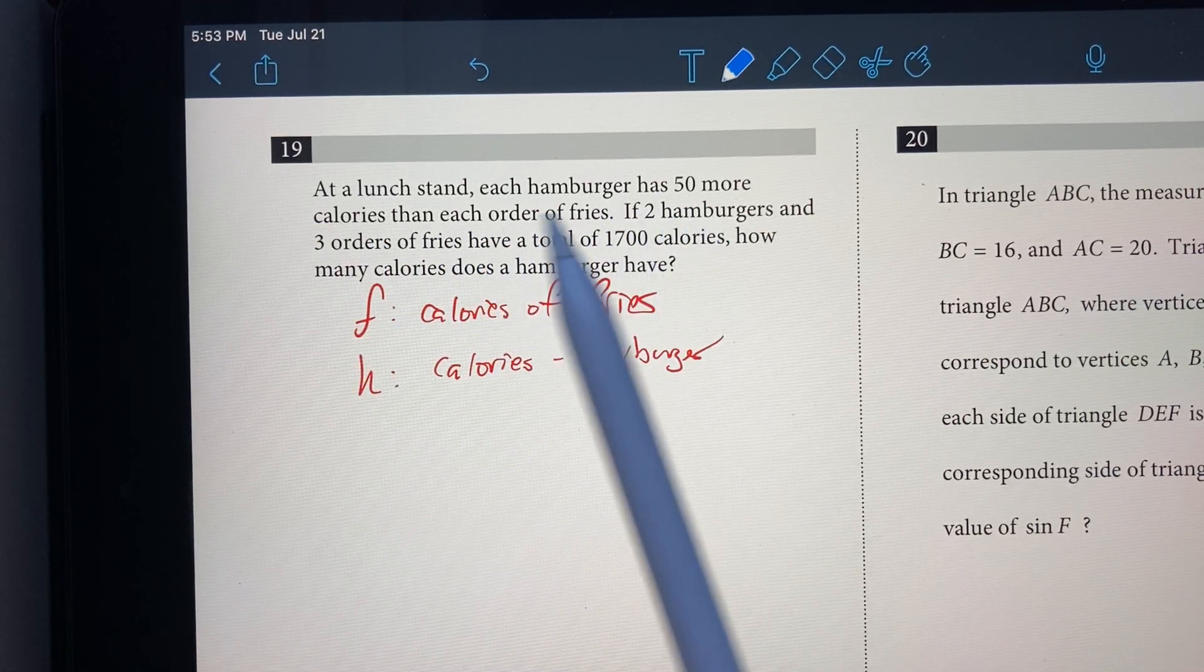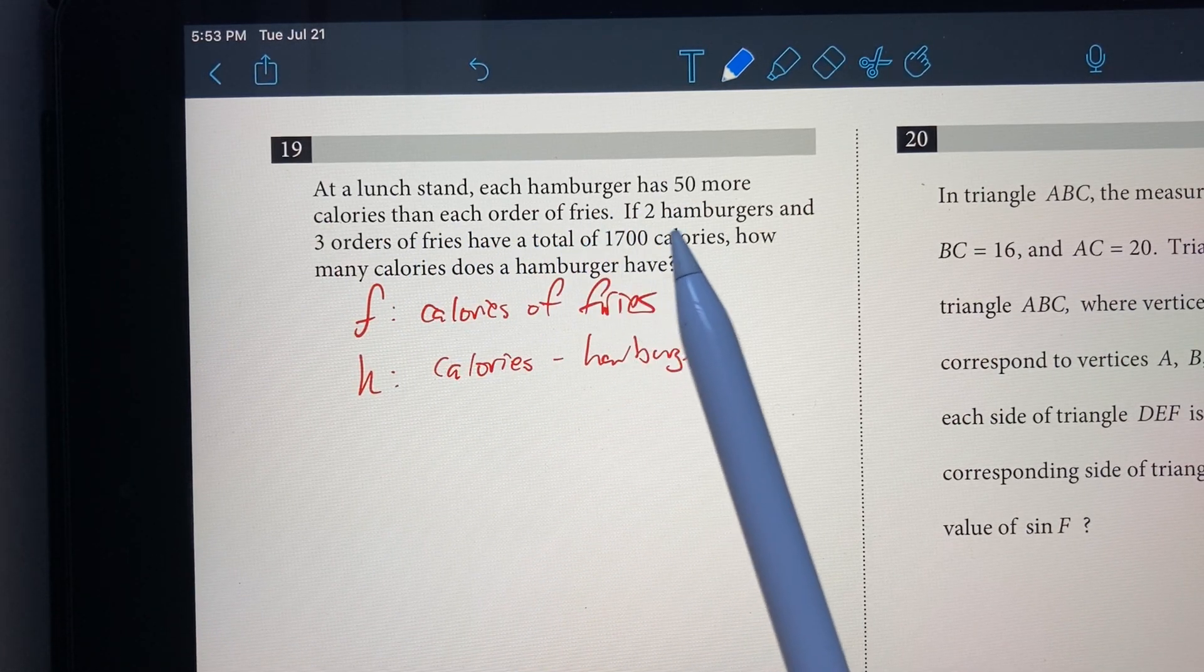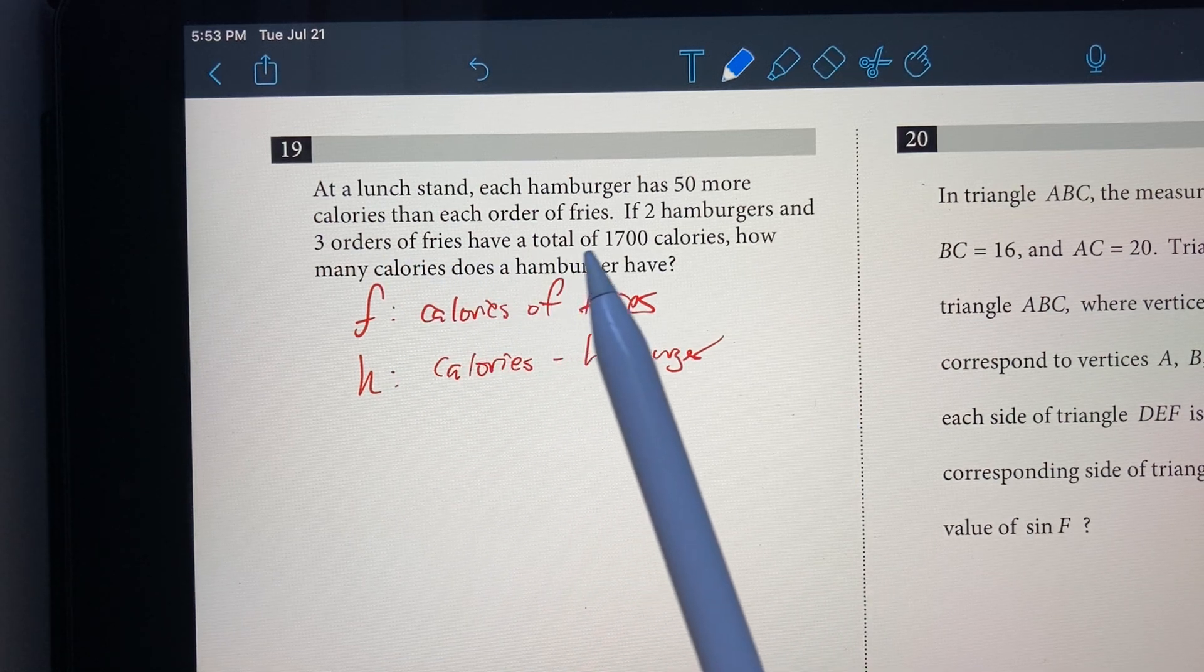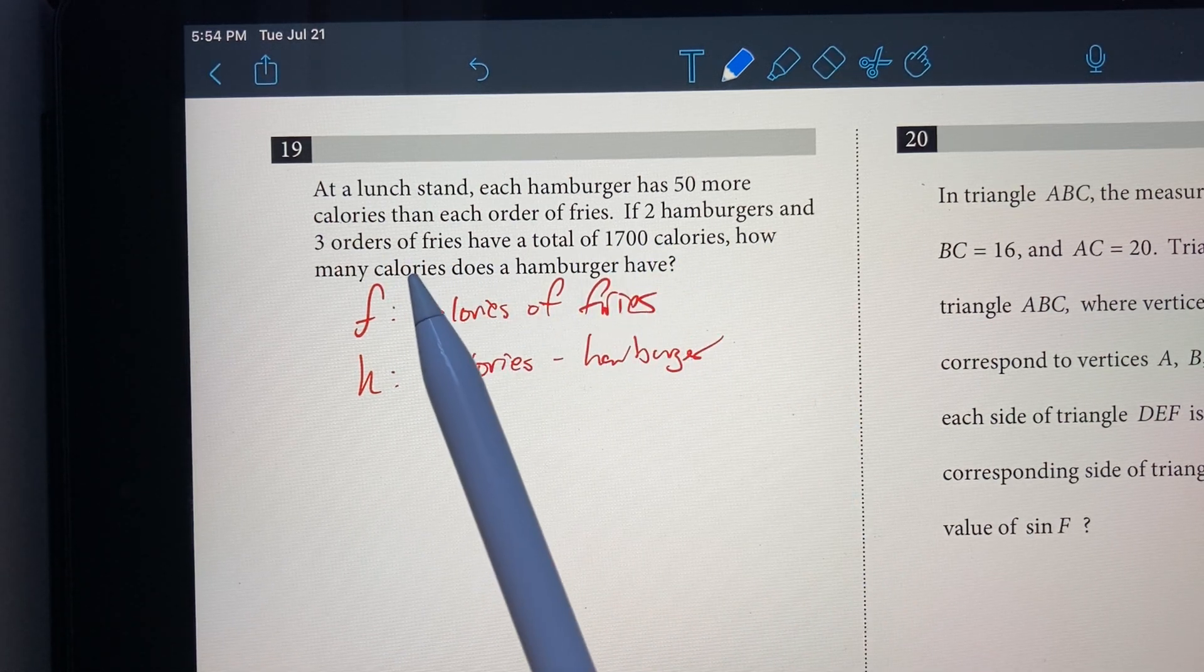At a lunch stand, each hamburger has 50 more calories than each order of fries. If two hamburgers and three orders of fries have a total of 1,700 calories, how many calories does a hamburger have?